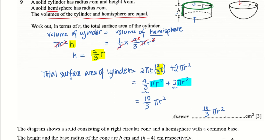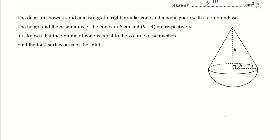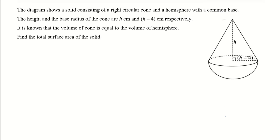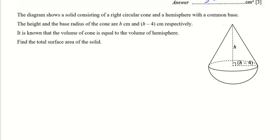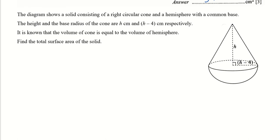Now we move on to the next question, which involves a cone and a hemisphere. We need to remember some formulas: volume of a cone is 1/3 pi r squared h; curved surface area of a cone is pi r l. For a hemisphere, the volume is half times 4/3 pi r cubed; curved surface area is half of 4 pi r squared. These formulas are also given in your formula sheet.